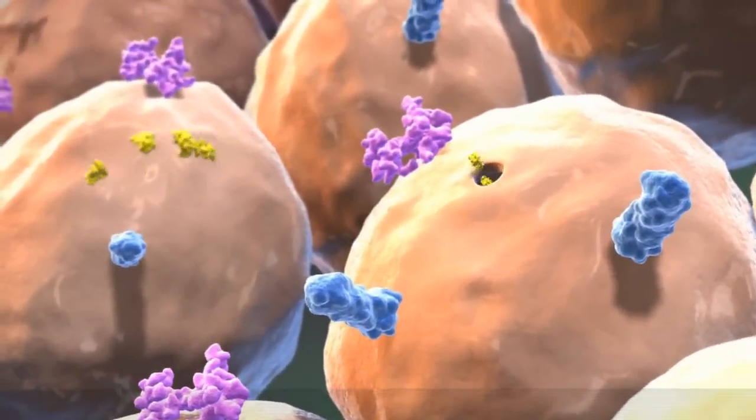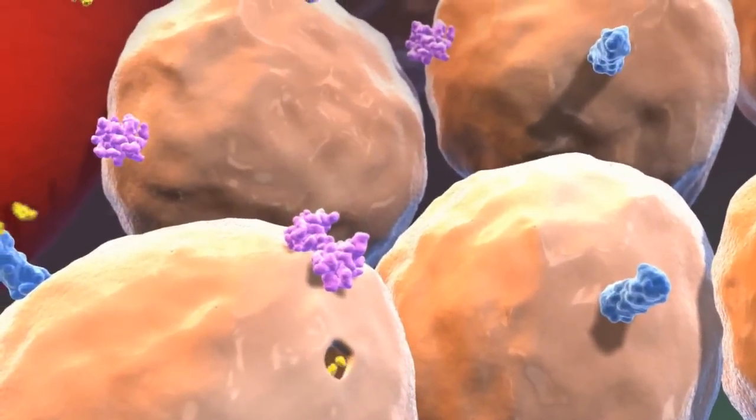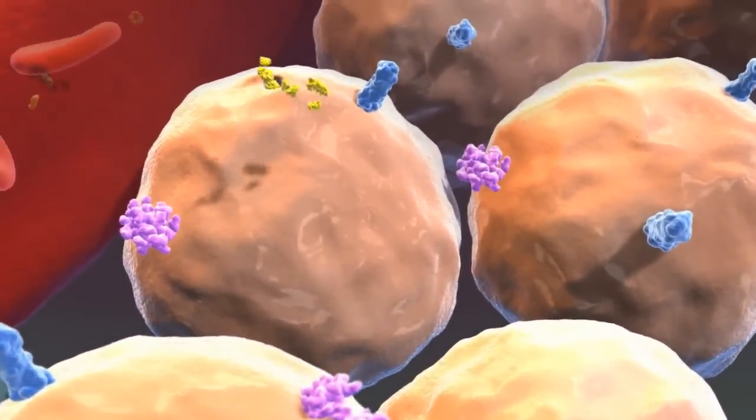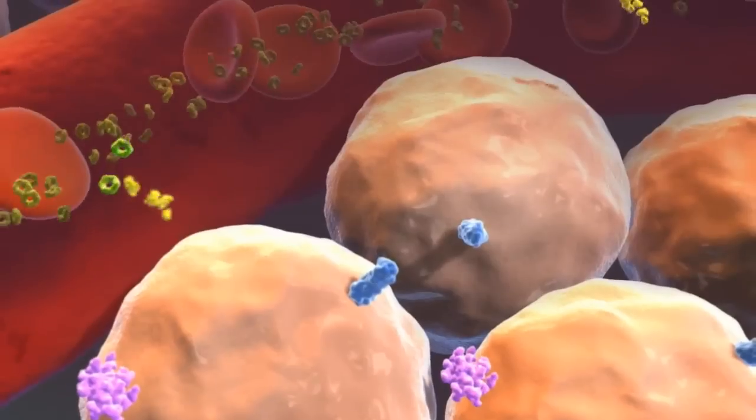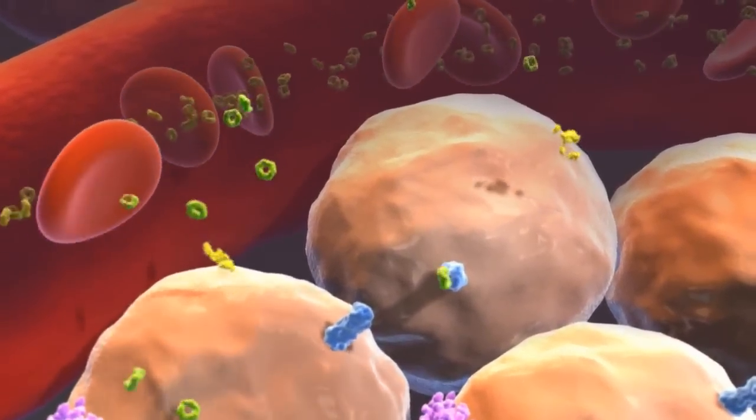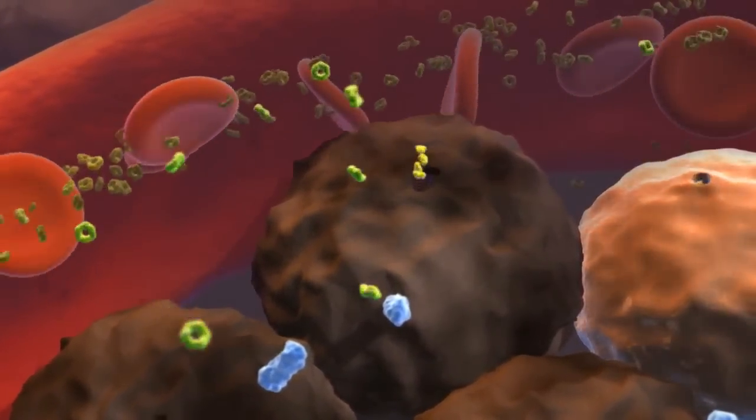Over time, the beta cells may fail to produce enough insulin to meet the demand created by insulin resistance. This failure may also be worsened by glucotoxicity, the deleterious effect of elevated glucose on beta cell function and its contribution to insulin resistance.